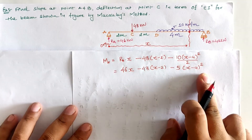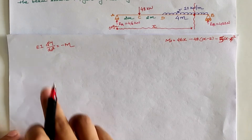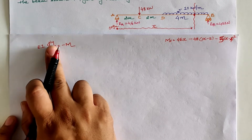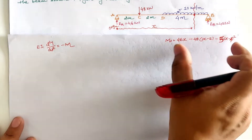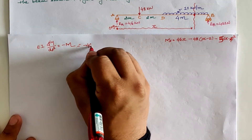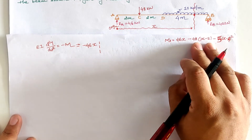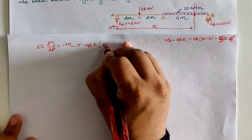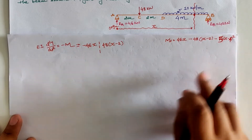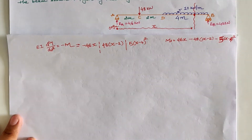Using the elastic curve (Euler-Bernoulli) equation, EI d²y/dx² equals negative M. Substituting the moment expression: the first term becomes negative 46x (sign from negative M), the 48 term becomes positive 48 into (x minus 2), and the UDL term is 5 into (x minus 4) squared. We now integrate this equation.